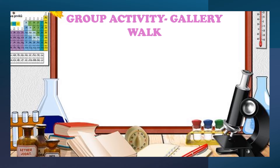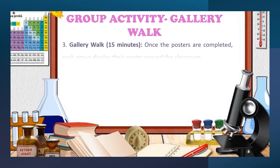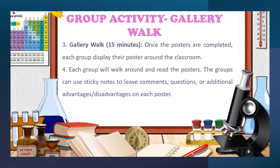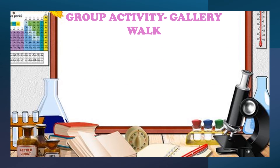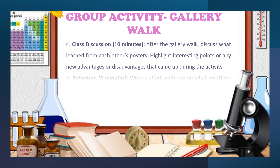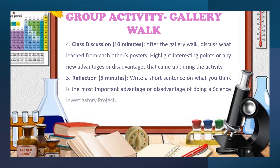The gallery walk will be 15 minutes. Once the posters are completed, each group will display their poster around the classroom. Each group will walk around and read the posters. Groups can use sticky notes to leave comments, questions, or additional advantages and disadvantages on each poster. After the gallery walk, discuss what you learned from each other's posters and highlight interesting points or any new advantages or disadvantages that came up. Lastly, write a short sentence on what you think is the most important advantage of doing a science investigatory project.